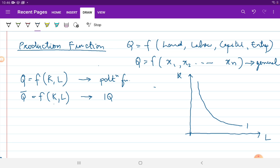It was drawn like this, where the entire groups or combinations of K and L which gives you the same level of output IQ0 are represented by the different points on the curve just drawn.